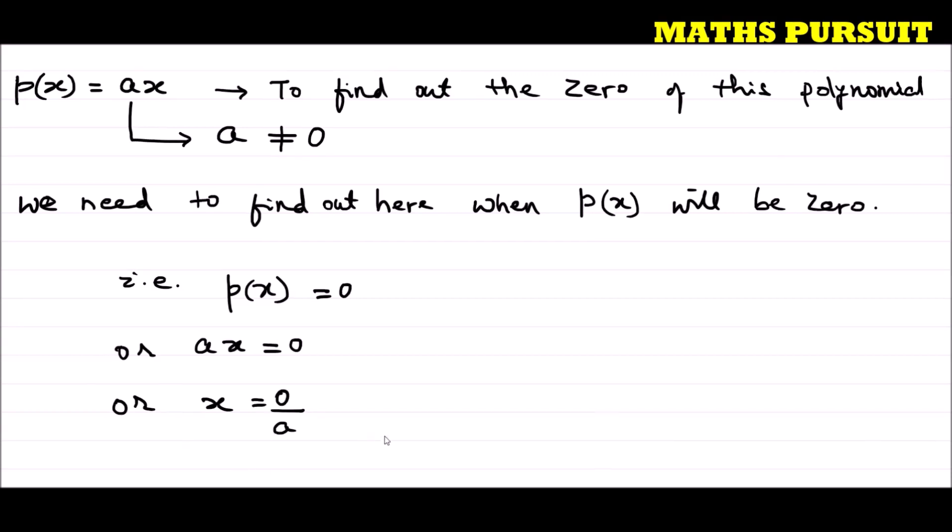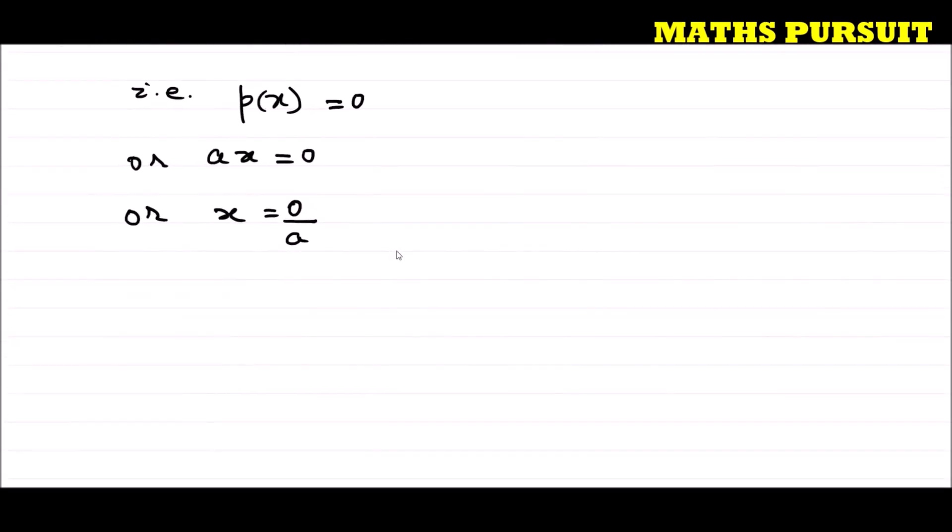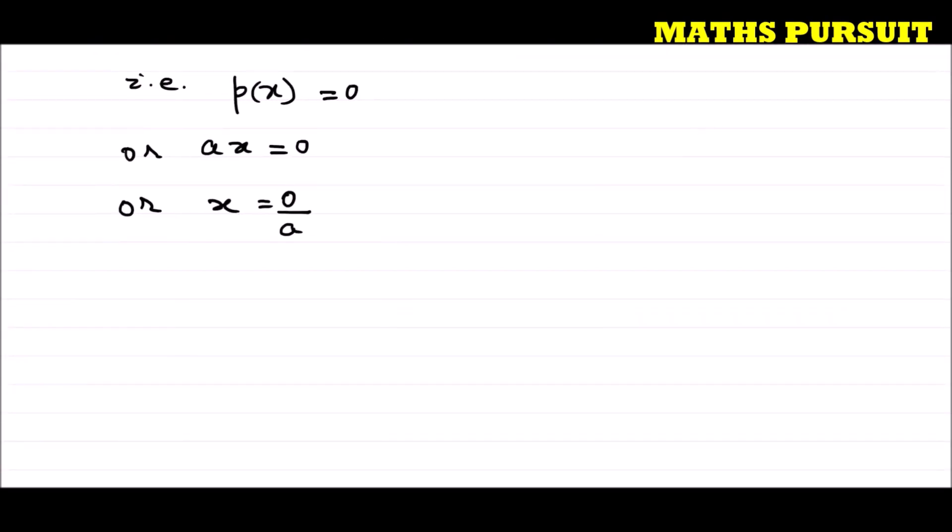So what we got? We got ax is equal to zero upon a. Or I can write x is equal to zero. Because zero upon anything is zero. So we got our answer.